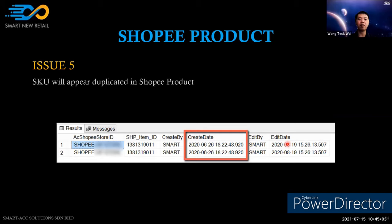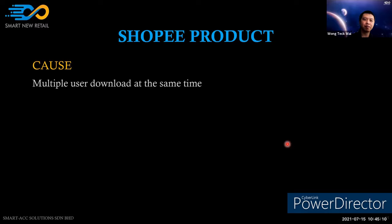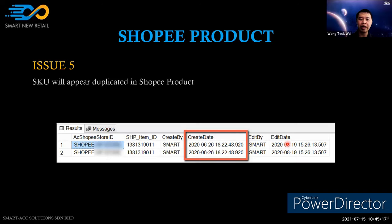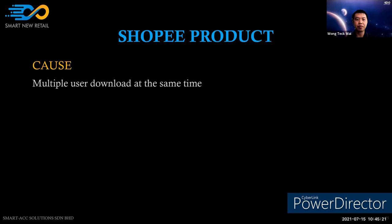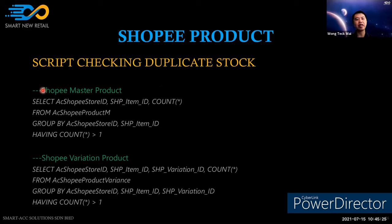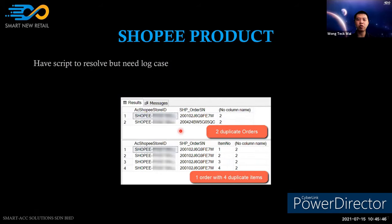Issue five: some SKUs appear duplicated in Shopee products. This happens because multiple users are downloading items at the same time. To troubleshoot, use a script to check the database for any duplicate stock entries. Once you run the script and provide the information in a log case, further checking will be done and a resolution script will be provided.